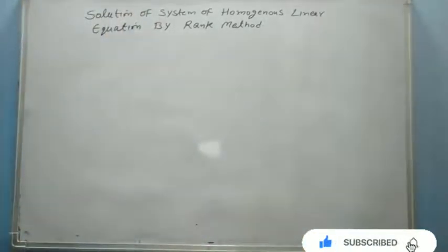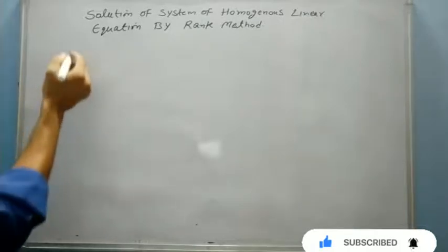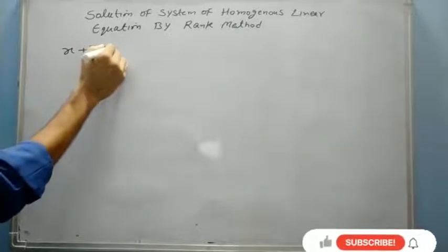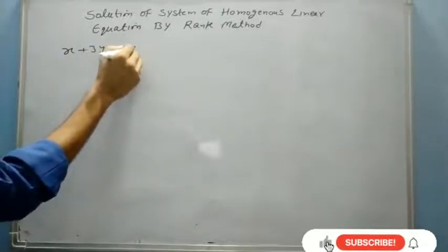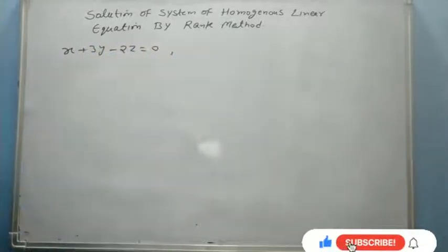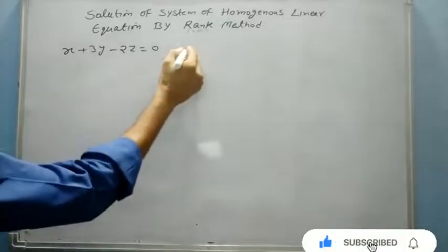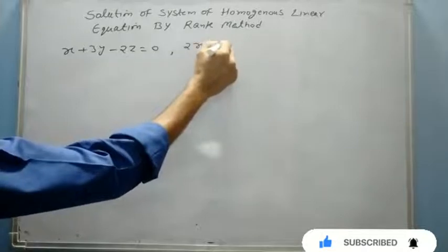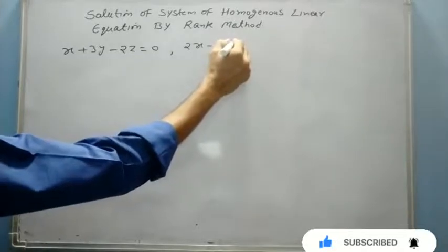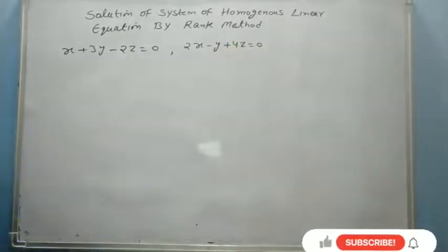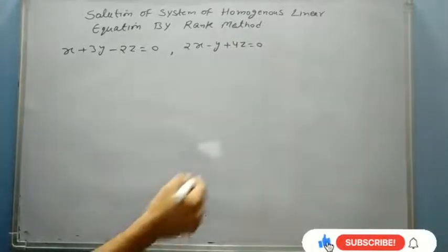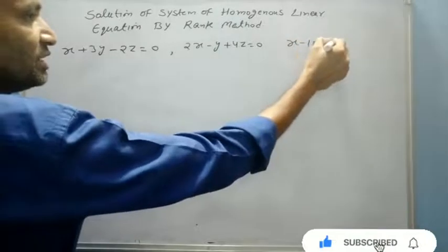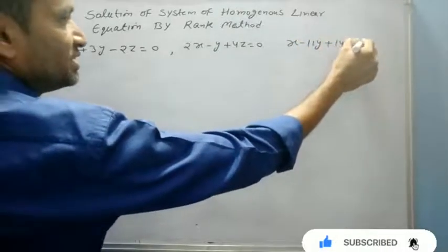This is my example: x plus 3y minus 2z equals 0. Second equation is 2x minus y plus 4z equals 0. And the third equation is x minus 11y plus 14z equals 0.